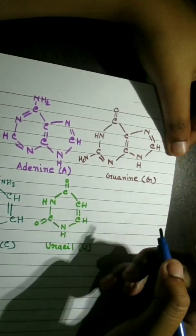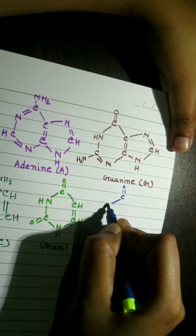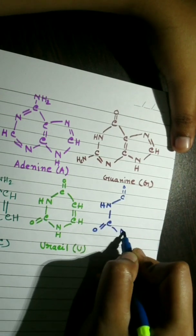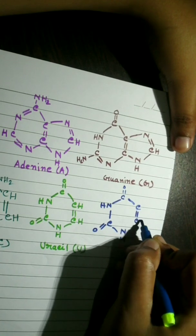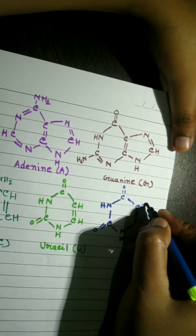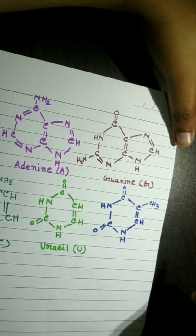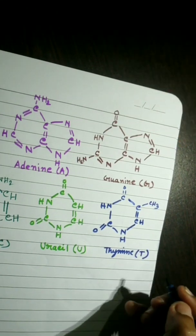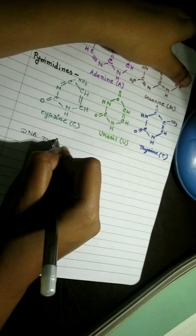Adenine pairs with thymine with 2 hydrogen bonds and guanine pairs with cytosine with 3 hydrogen bonds. One way to remember which bases go together is to look at the shapes of the letters themselves. The letters made up of only straight lines A and T are paired with each other while the letters made up of curves G and C also go together.